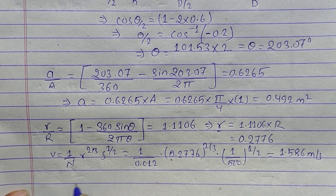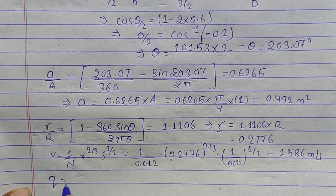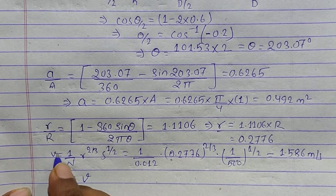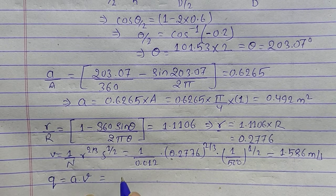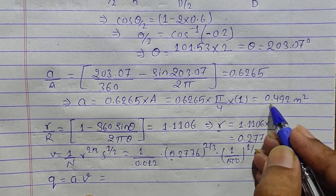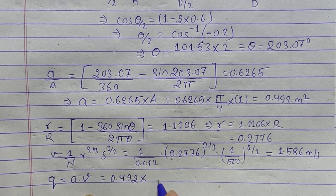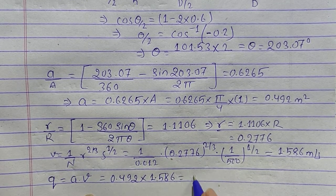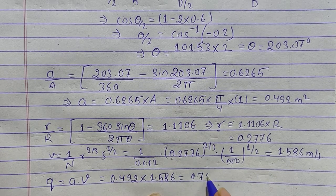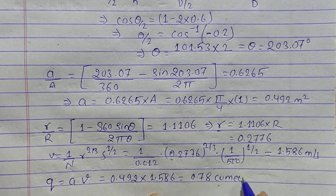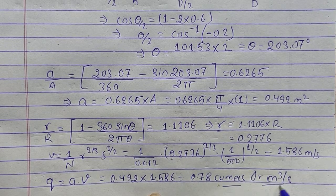We are now at the second part of the numerical: finding the discharge. Discharge Q = area × velocity, where area is the partial-flow area. So Q = 0.492 × 1.586 = 0.78 m³/s (cubic meters per second).